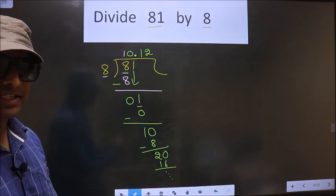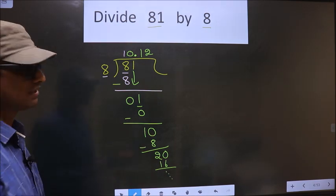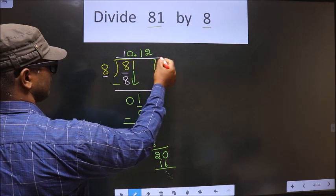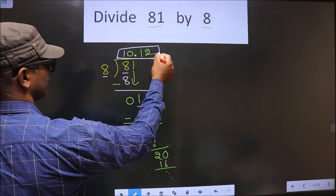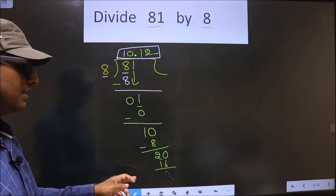Did you understand where many do the mistake? Be careful of this one. So, this is our quotient. Am I clear?